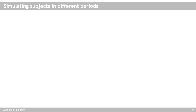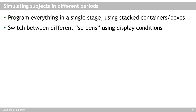Sometimes, despite CETRI not allowing subjects in different periods, you may actually want this in an experiment. You can simulate different periods by programming your entire experiment in a single stage, using stacked boxes to simulate the different screens subjects see, and switching between these screens using display conditions. I highly recommend using container boxes, so the first container is screen one, the second is screen two, and you can use one variable to switch off an entire container and switch on another.